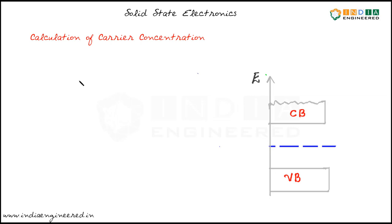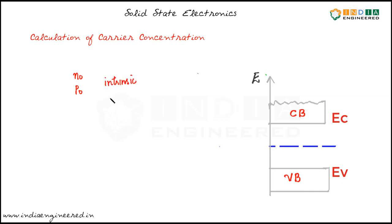We have calculated the number of electrons per centimeter cube, that is N0, and the number of holes per centimeter cube, that is P0. We have found the carrier concentration. These expressions are valid for intrinsic as well as extrinsic material, that is N-type and P-type materials.